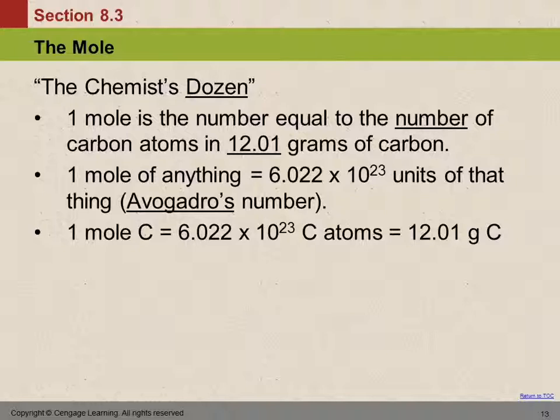And now it got quiet. Good. So, another way to think of the mole is the chemist's dozen. What is a dozen? Twelve. Twelve what? Twelve anything, right? Dozen is a number — dozen is twelve. The mole is a number. It's just a little more complicated than twelve.